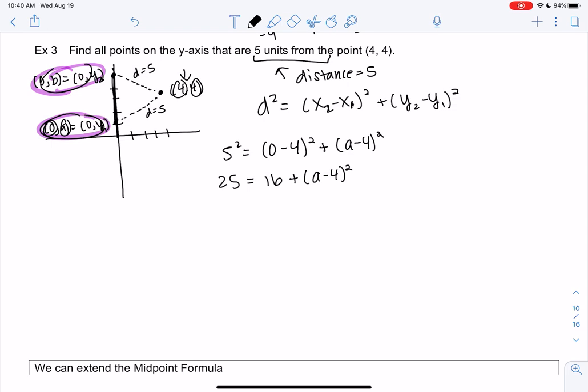So we get 25 = 16, and then remember it's (a - 4) times (a - 4). Make sure you distribute that out. It's not a² - 16.